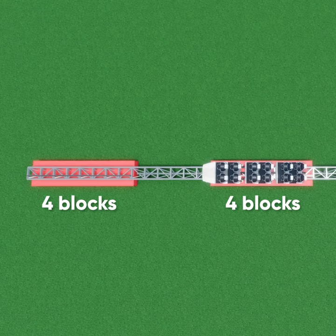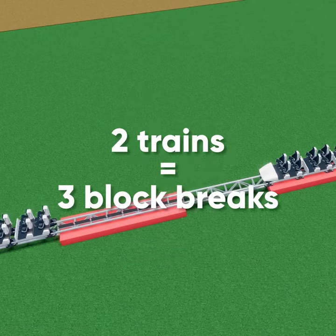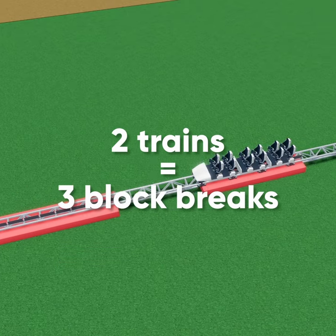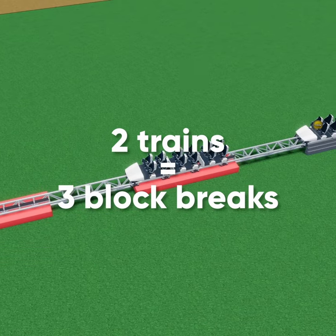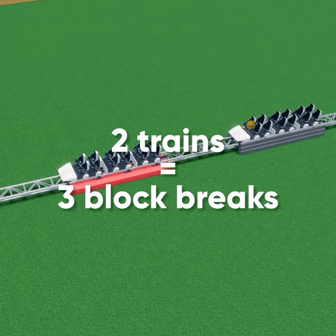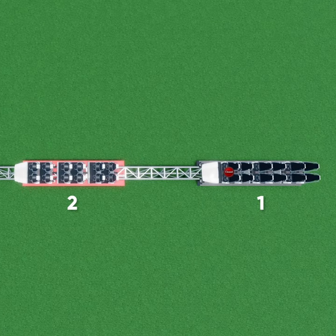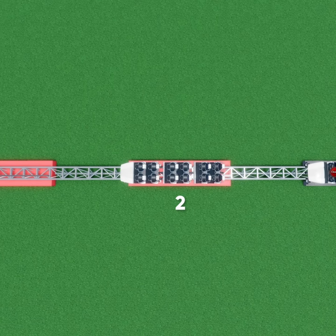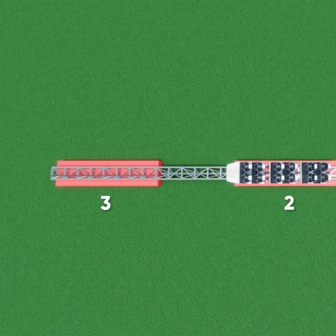1. Each set of block breaks must be at least as long as the train. 2. If you want to have two trains running, you must have at least three block break runs. However many trains you want, add one onto that number.